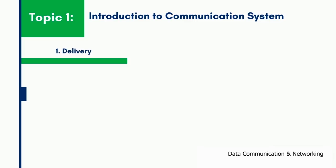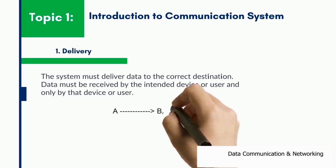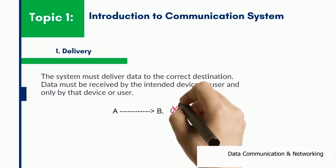Delivery means the data must be delivered to the correct destination. Let us take an example. If A is intending to send some data to B, then the data must be delivered to B. Delivering it to C is something which A wouldn't be expecting.